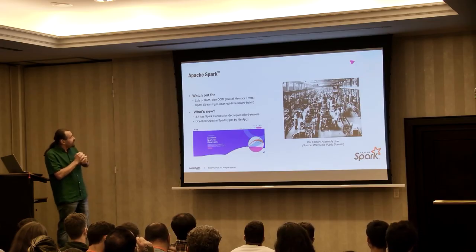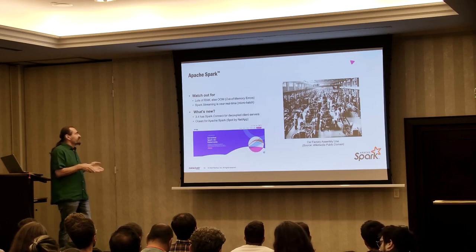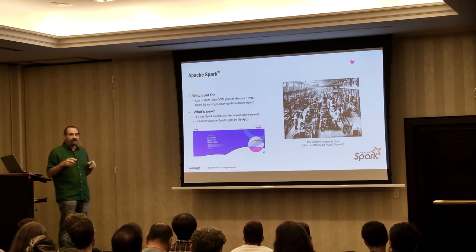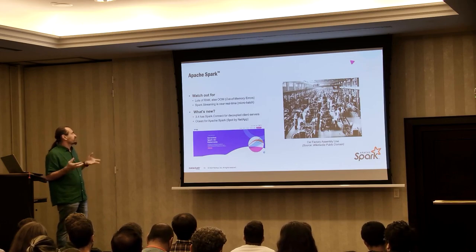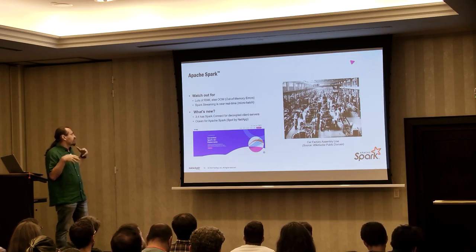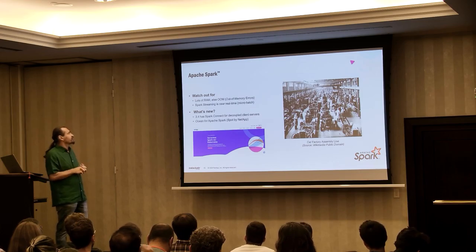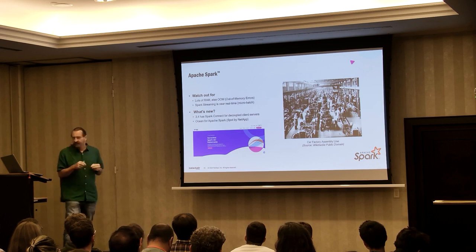Things to watch out for: it needs lots of RAM, otherwise you get OOM errors. Spark Streaming is near real-time using micro-batching — it's not quite as real-time as Kafka. In 3.1, there are new things called Spark Connect to decouple client and server. We actually have a version of Spark called Ocean for Apache Spark, which runs on Kubernetes, which is a cool way of scaling.